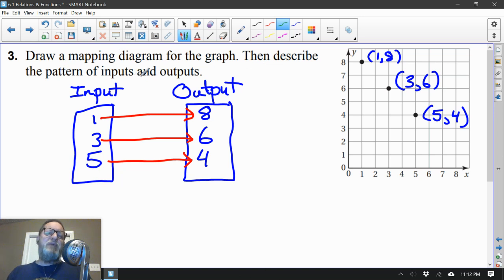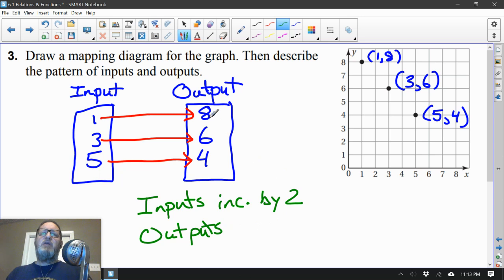It also says describe the pattern of inputs and outputs. So for the inputs, what's happening? Well, they're increasing by 2. 1 plus 2 is 3 plus 2 is 5. So the inputs are increasing by 2. The outputs, do you see what they're doing? 8 down to 6, down to 4. Those look like they are decreasing by 2.